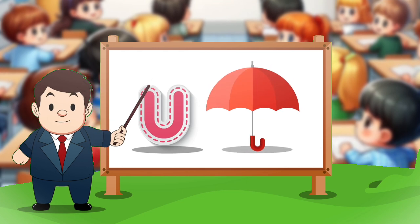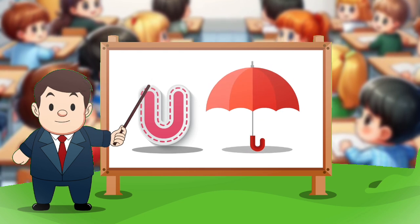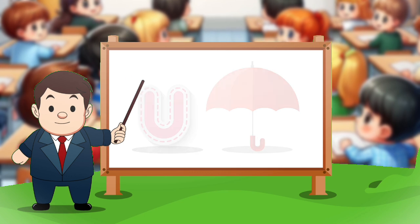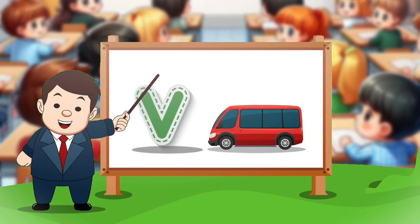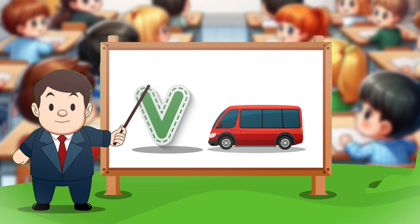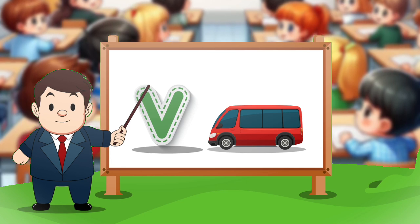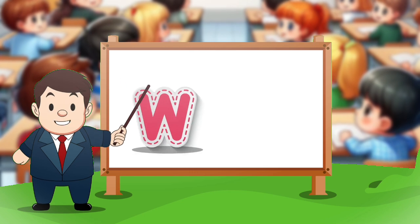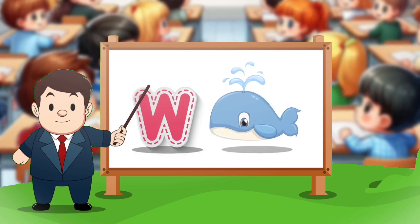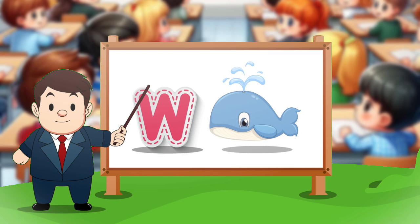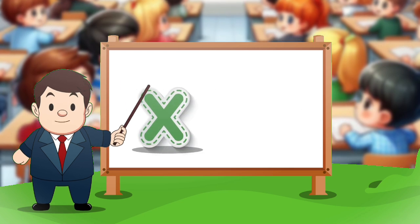U. U for umbrella. V. V for turtle. W. W for whale.